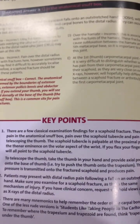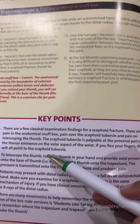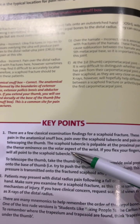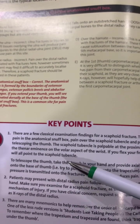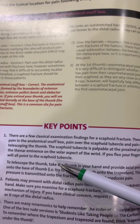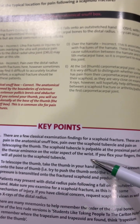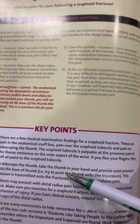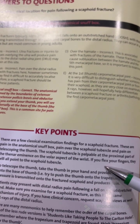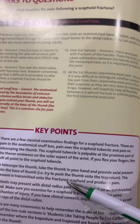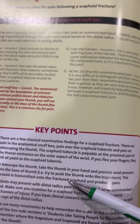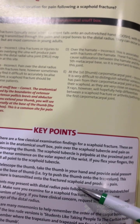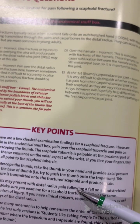Key points in the examination for scaphoid fracture include: pain in the anatomical snuffbox, pain over the scaphoid tubercle, and pain on telescoping of the thumb. The scaphoid tubercle is palpable at the proximal part of the thenar eminence on the volar aspect of the wrist. If you flex your fingers, they will all point to the scaphoid tubercle. To telescope the thumb, take the thumb in your hand and apply axial pressure onto the base of the thumb.